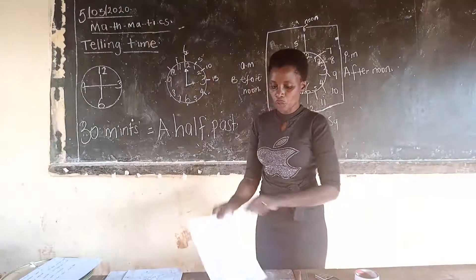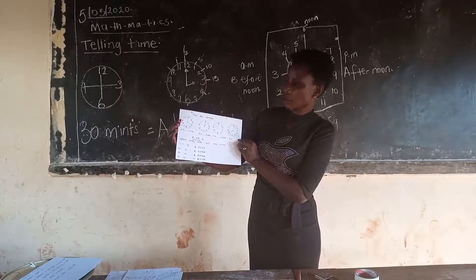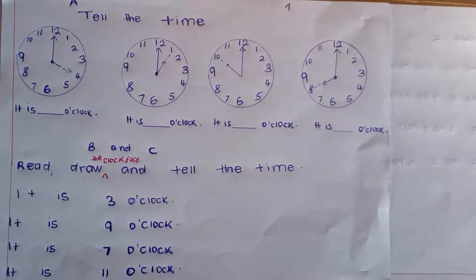Now, before we continue, can we please mark our work? Get ready, so fast. Group S. Our work was like this. Here, on number 1, it is 4 o'clock. If you have 4 o'clock, tick.